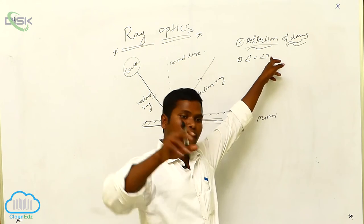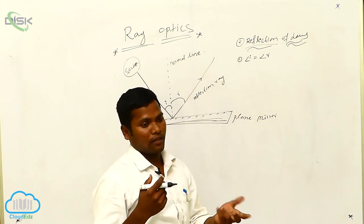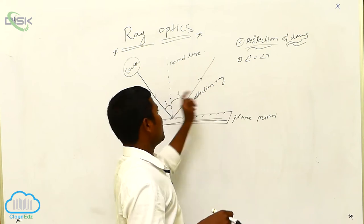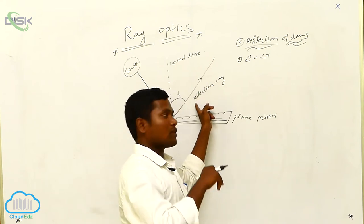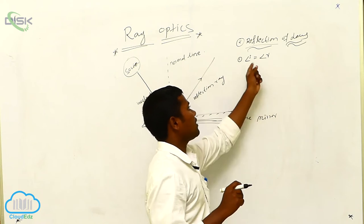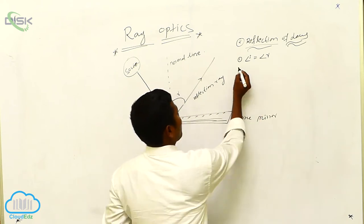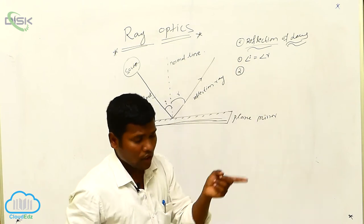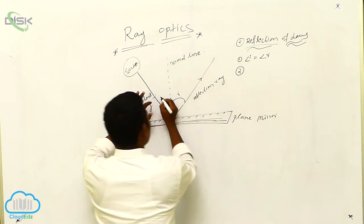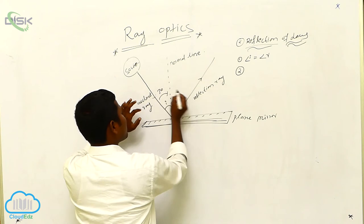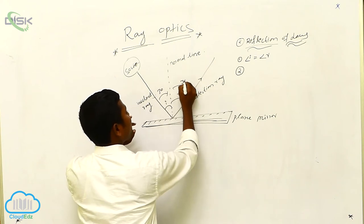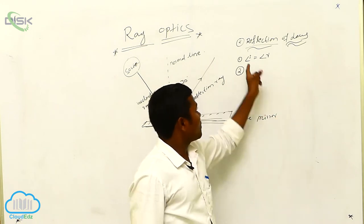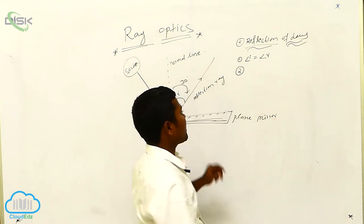You can use any alphabet, but I use i because it is the first letter of 'incident', and r because it is the first letter of 'reflection'. So angle of i equals angle of r. For example, if the angle is 30 degrees, then the other must also be 30 degrees for the law of reflection to hold.